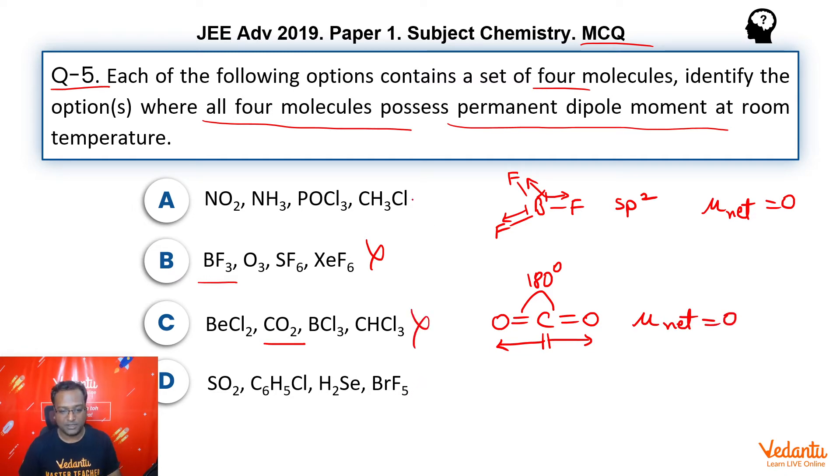Now, we have option A left, we have option D left. We will have to explore all of them to ensure that there is no compound in which dipole moment comes out as zero. So, let me take them on the next slide.